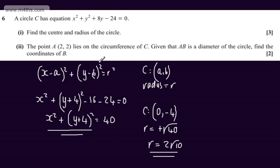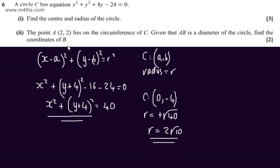In the second part of the question, for two marks, we're told that point A, 2 comma 2, lies on the circumference of C. Given that AB is the diameter of the circle, find the coordinates of B.